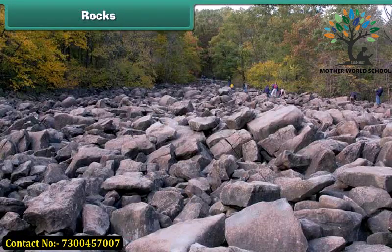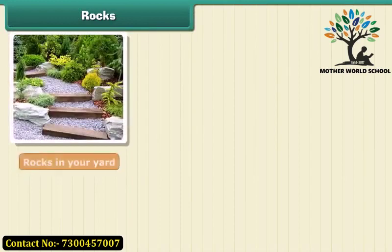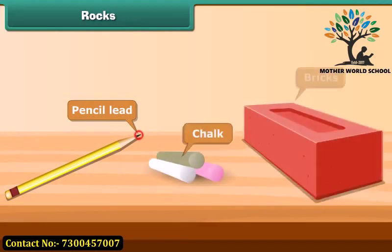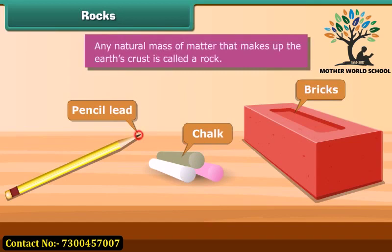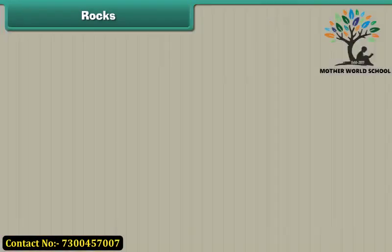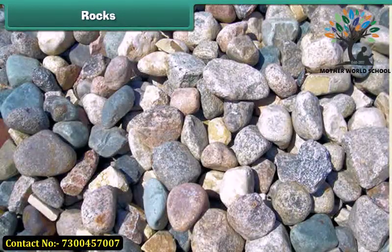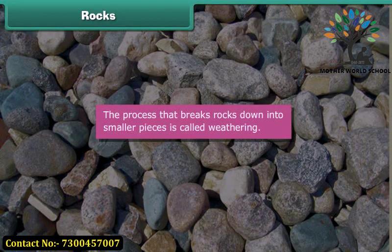Rocks are all around us. You can see rocks in your yard, on your street, on a road — everywhere you look. Pencil lead, chalk, and bricks are all rocks. Any natural mass of matter that makes up the earth's crust is called a rock. Do you know sand and mud are also rocks? Rocks can be of different sizes and colors. The process that breaks rocks down into smaller pieces is called weathering.